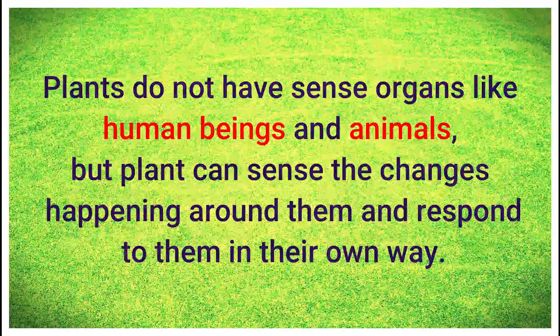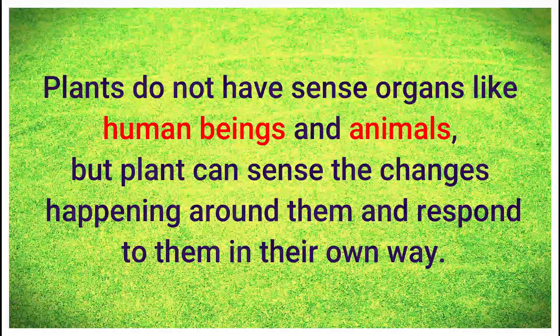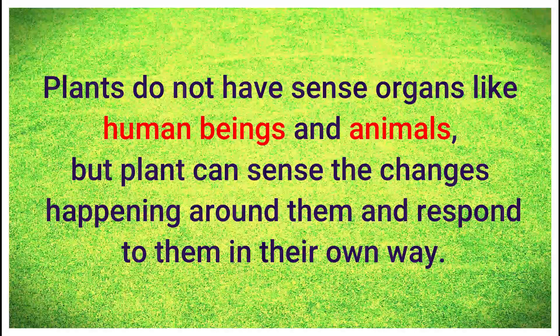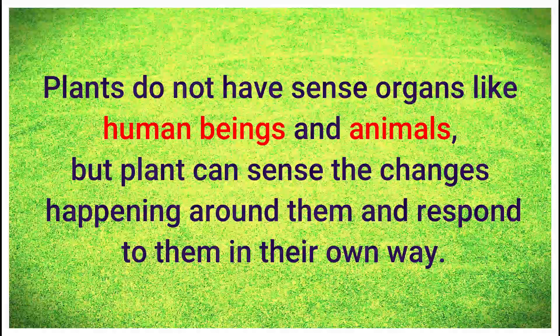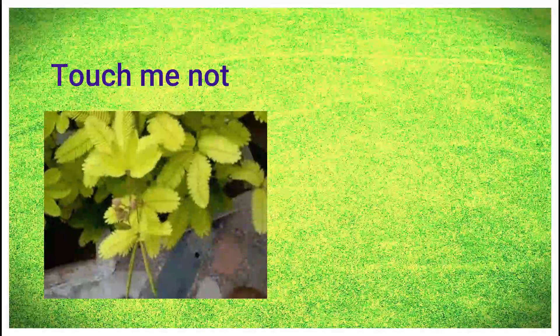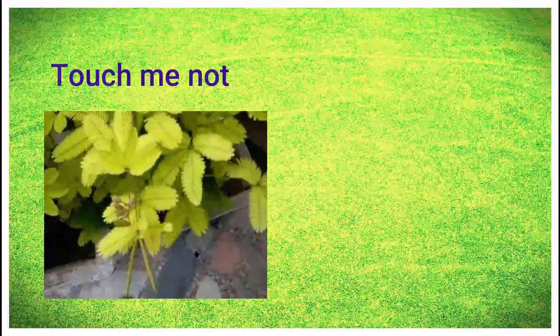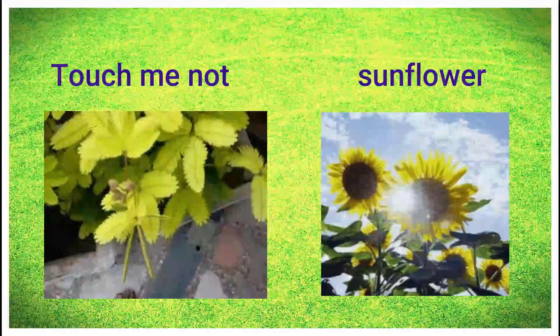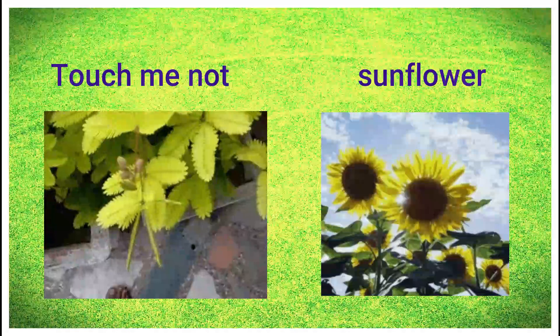Plants do not have sense organs like human beings and animals, but plants can sense changes happening around them and respond in their own way. As you can see here, in the touch-me-not plant, when you touch it, it closes its leaves. In the sunflower plant, when sunlight falls on the sunflower, it bends towards the sun.